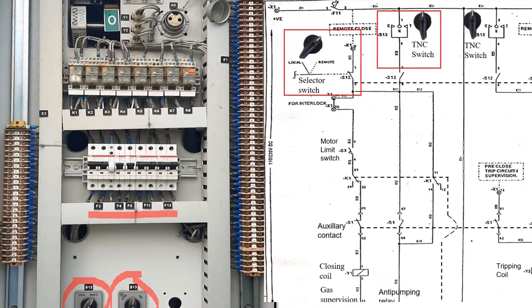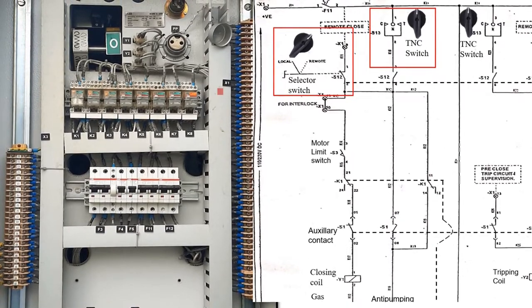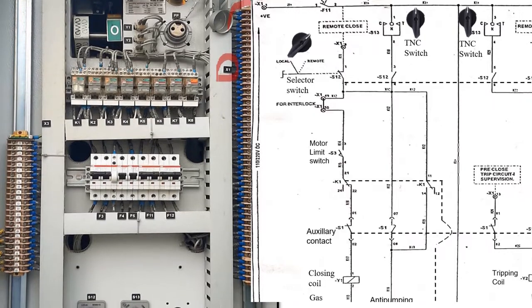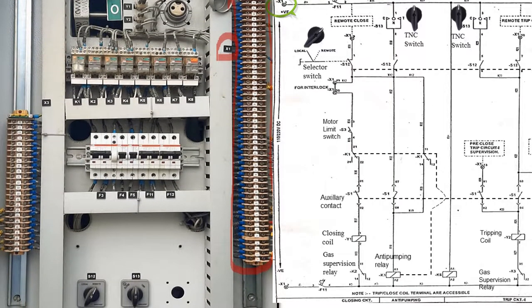At last we have terminal block X1 shown on the right side with number of terminals, and terminal block X3 on the left hand side. So it gets completed and now we try to learn how to read its wiring schedule.